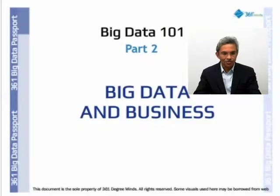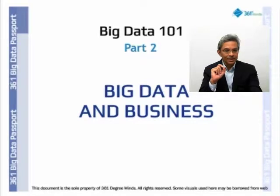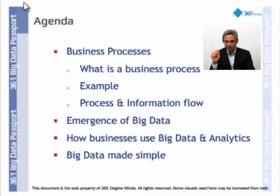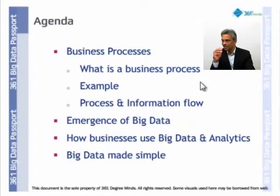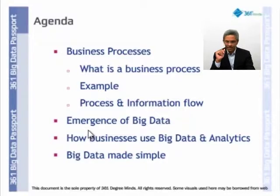We've come to the second part of our big data session. The objective is basically very simple — it's to understand the information that will be needed to operate a business or a business process. We'll talk about what a business process is, show an example of one, show how the process and information flows, and look at the emergence of big data.